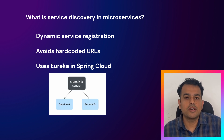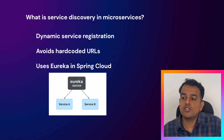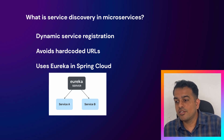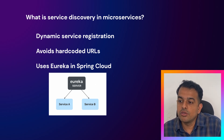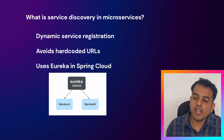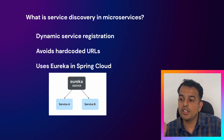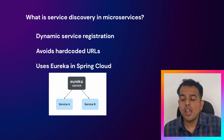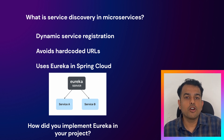As you can see in this diagram, there is Service A and Service B — both services are registering themselves and sending their details to Eureka Server. When Service A wants to communicate with Service B, it contacts the Eureka Server to get Service B's information. As a follow-up, they might ask how you implemented Eureka in your project.